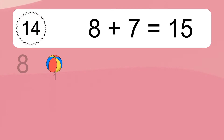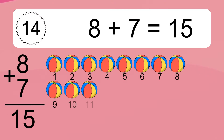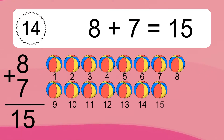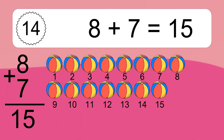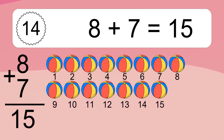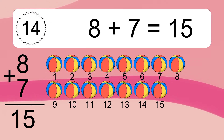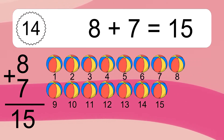8 plus 7 equals 15. Let's count it. 1, 2, 3, 4, 5, 6, 7, 8, 9, 10, 11, 12, 13, 14, 15.